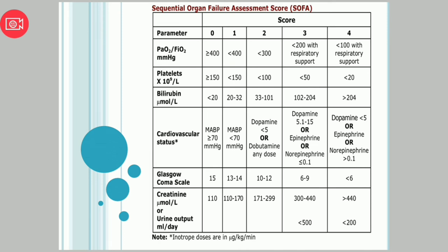For platelet count: more than 150,000 per liter, score is 0. Less than 150,000, score is 1. Less than 100,000, score is 2. Less than 50,000, score is 3. Less than 20,000, score is 4.